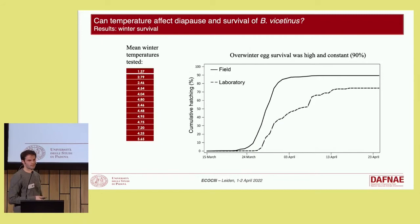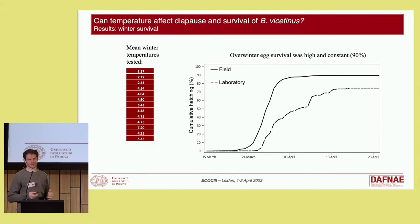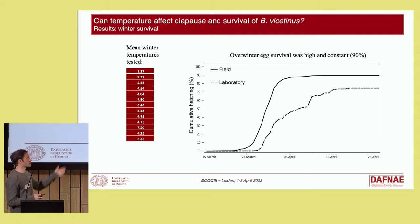While we found a strong effect of summer temperatures on development, we did not detect any effect of winter temperatures on survival. Overwinter egg survival was high and constant across all sites and all temperatures tested. Again, incubation at constant temperatures resulted in lower hatching rates in spring compared to field conditions.